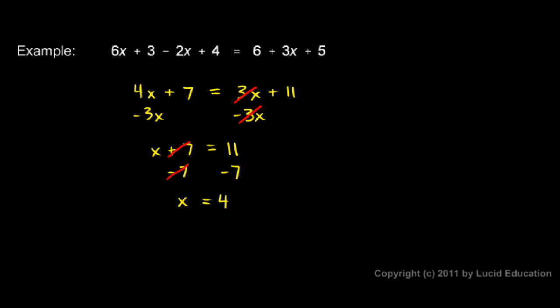What this means is that this original equation I started with is a true statement if x is equal to 4. If I put in a 4 right there and right there and right there, then this equation is true. What I have found is that 4 satisfies this equation.